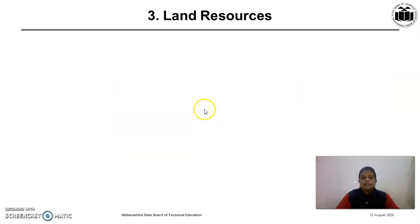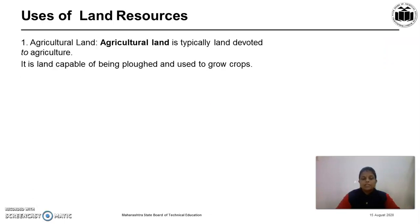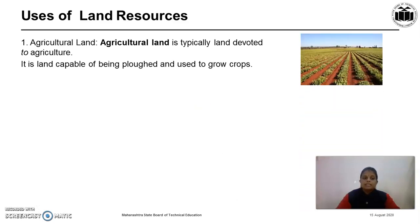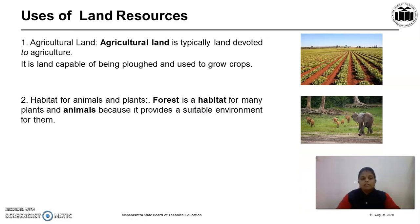The third type of natural resources is land resources. Land is among the most important natural resources. It covers only 29% of the earth's surface. Land is a naturally occurring finite resource. It provides the base for survival of living beings and holds everything that constitutes the terrestrial ecosystem. It is used as agricultural land — typically land devoted to agriculture, capable of being cultivated to grow crops. It is also used as habitat for animals and plants, as forests provide a suitable environment for them.